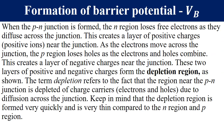More on the formation of the depletion layer or barrier potential: barrier potential is represented in most books as VB, where B stands for barrier and V stands for voltage. Electrons, because of diffusion, cross the junction going into the P region where they fill holes, leaving behind positive ions near the junction on the N region. When they cross the junction, they occupy holes, resulting in the formation of negative ions near the junction on the P side.